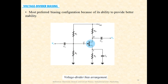The last configuration is voltage divider biasing, the most preferred biasing configuration because of its ability to provide better stability. If there are temperature variations or external environmental changes, the circuit remains stable with respect to those changes. Compared to all three biasing circuits, voltage divider biasing is the most stable. You may already be familiar with this circuit from studying BJT biasing configurations in basic electronics.